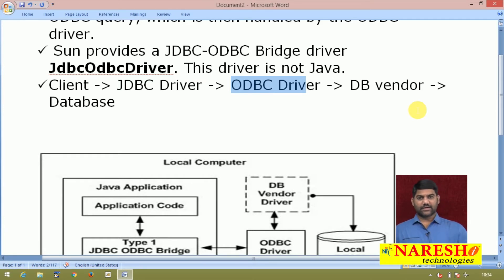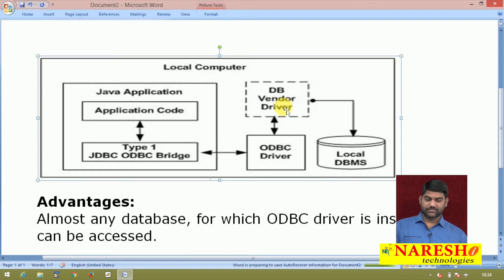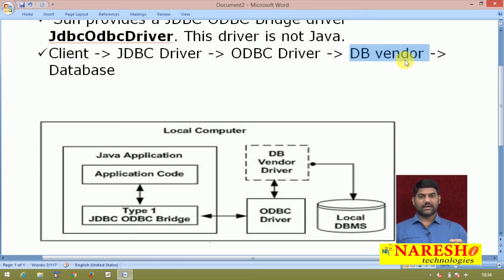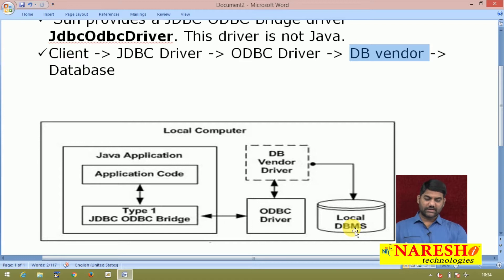It is a connector between the front end and the back end. The ODBC driver converts the call into the DB vendor driver's understandable format. After that, the DB vendor receives the call and converts it into the database-understandable format. Then lastly, your call is received by the database. The database processes the query, producing results or affecting the database. The result of the query is sent back in the same direction - the return journey follows the same path.